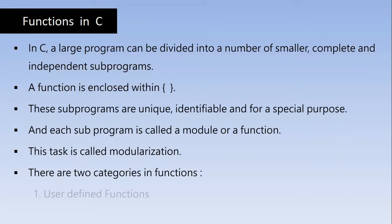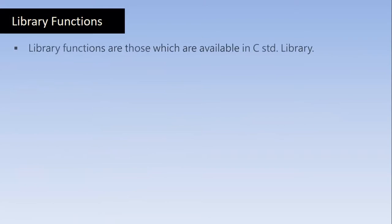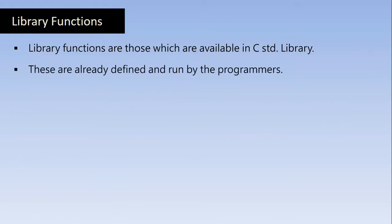There are two categories of functions: user-defined functions and library functions. Library functions are those which are already in the C standard library — like printf, scanf, clear screen, and string handling functions. These are already defined and written by programmers. We just call those function names and get the functionality. We are not bothered about the code — they are already built in. We just call those functions with their names and get the work done.